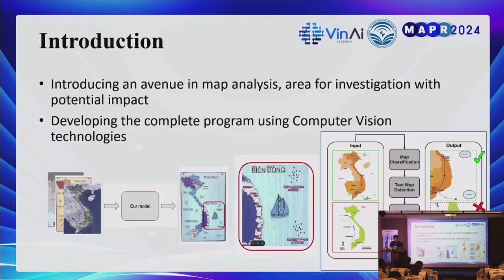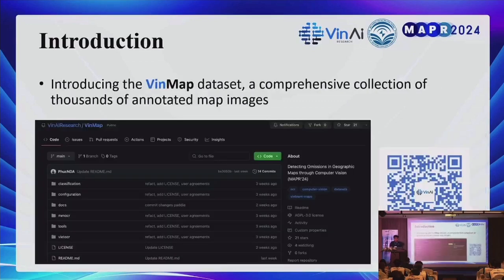We summarize our contributions in three parts. First, we introduced the problem of map analysis and developed a complete pipeline using computer vision technology to solve it. Second, we introduced the VIN map dataset, a comprehensive collection of thousands of images, alongside reproducible source code and the dataset available online.